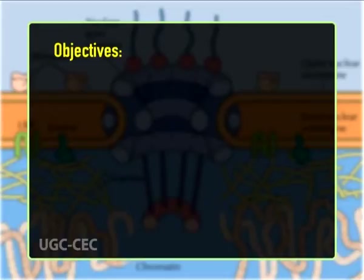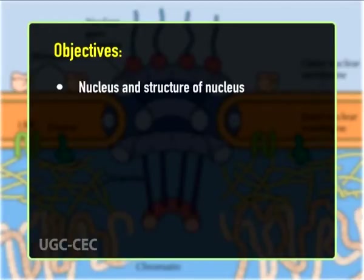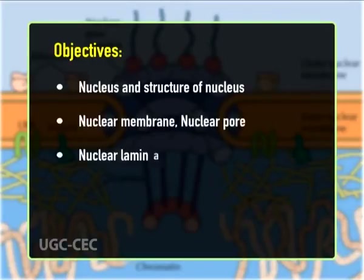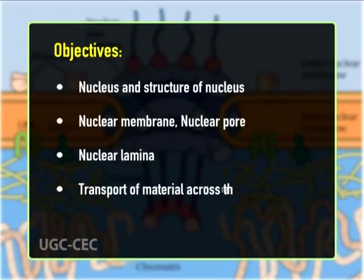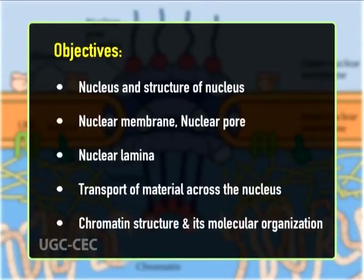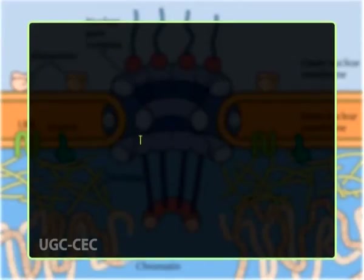Hello students and welcome to the lecture on nuclear lamina, transport across nuclear envelope, and chromatin organization. The main objectives of today's lecture are to give a brief introduction of the nucleus and its structure, to explain the nuclear membrane and nuclear pore, to explain nuclear lamina in detail, to give a clear idea of transport of materials across the nucleus, and to explain chromatin structure and its molecular organization.